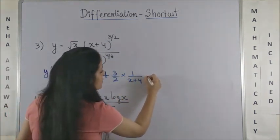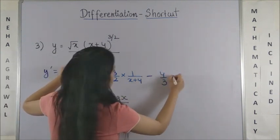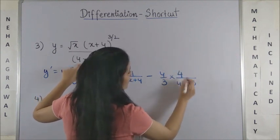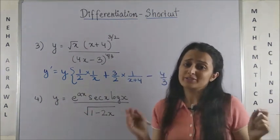Denominator gives you minus, so we have 4/3 into 1/(4x-3) into 4, which would be the derivative. Wasn't this so quick to write?